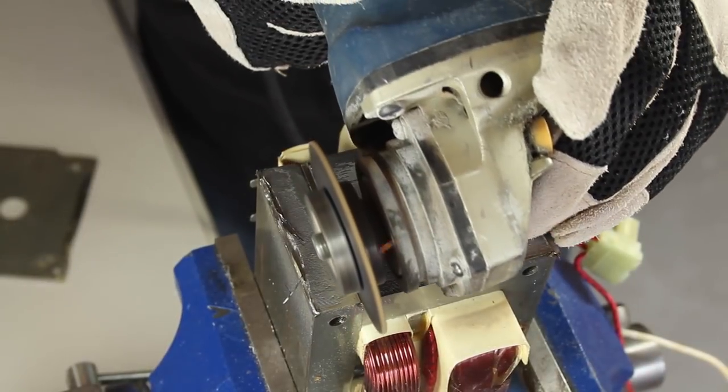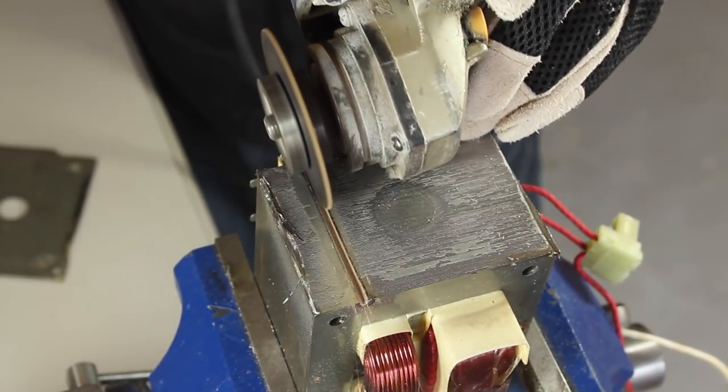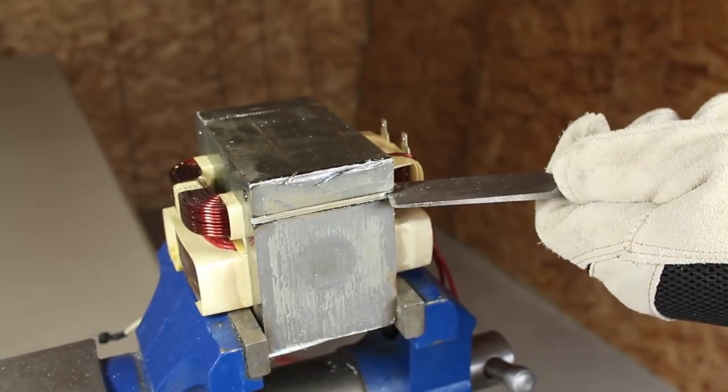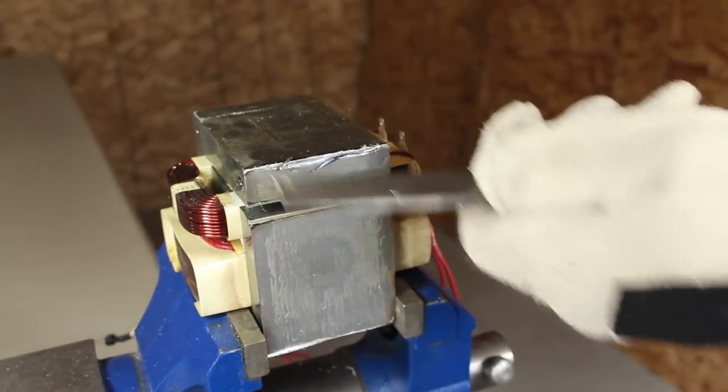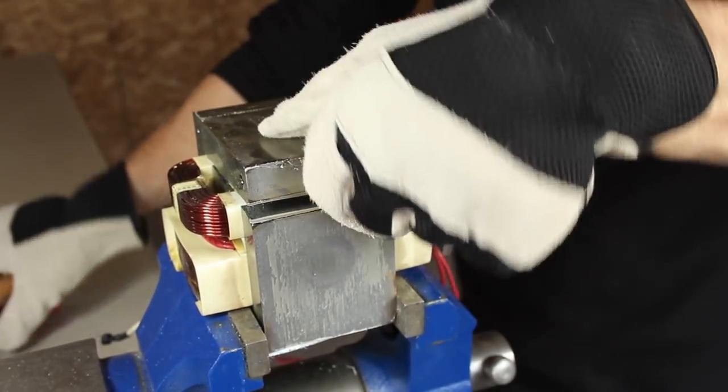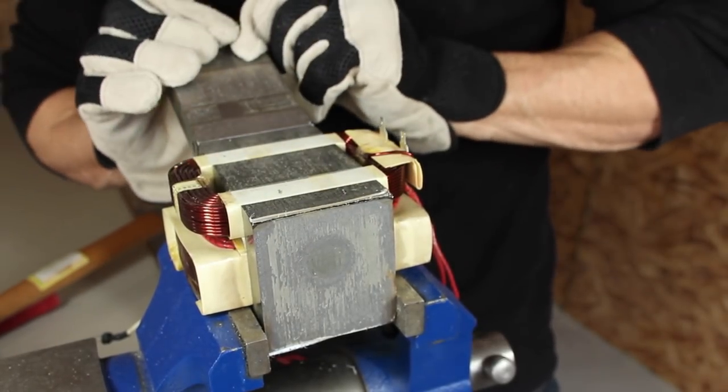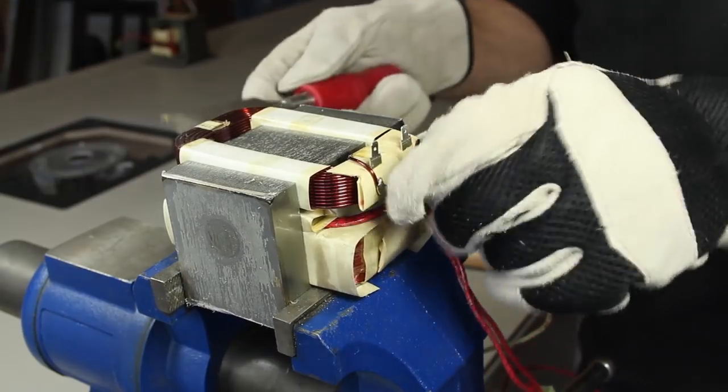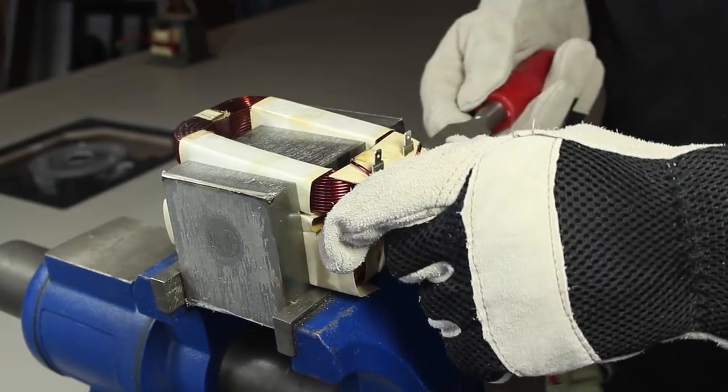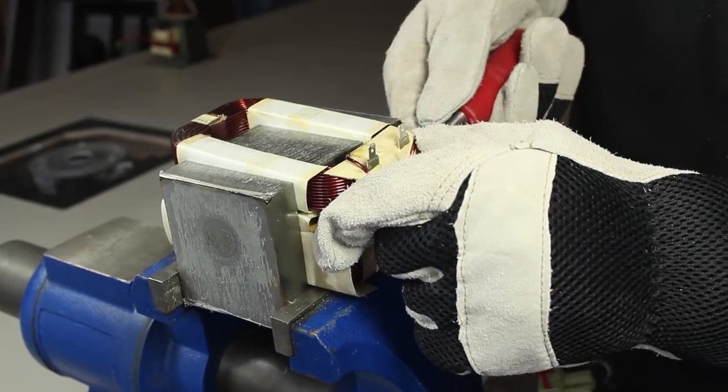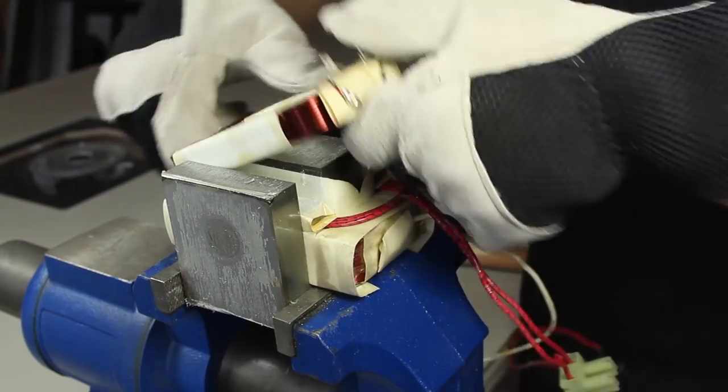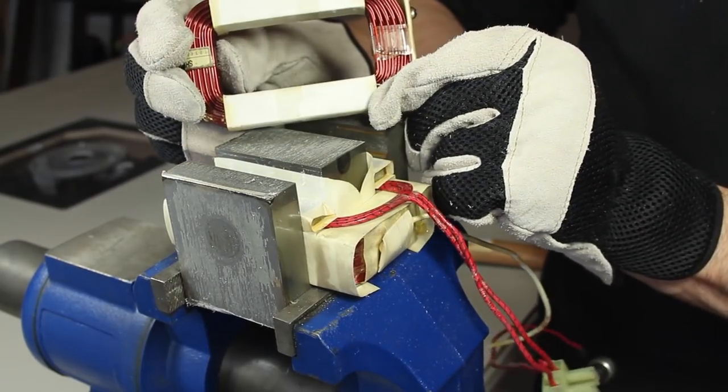These next few steps are going to look a lot like the modification we did in the metal melter project. After grinding the welds and opening the seam with a chisel, the eye section of the transformer can be pulled back to reveal the precious primary and secondary coils. I found that the primary coil can be removed by gently prying up with a chisel. It's important to work it out of the transformer gently, because the goal is to keep this in perfect condition.